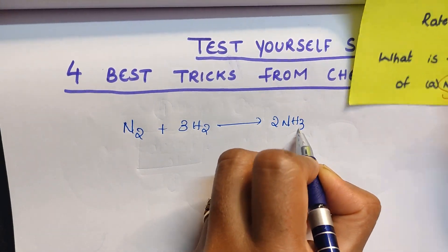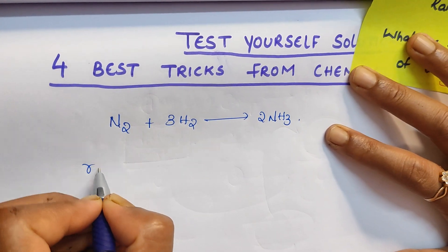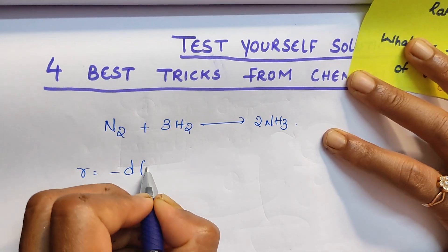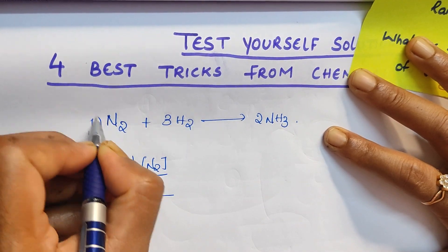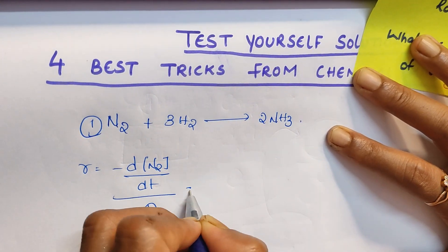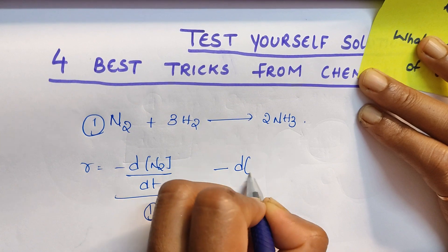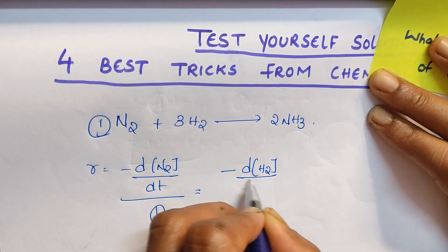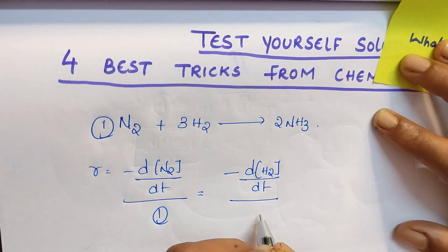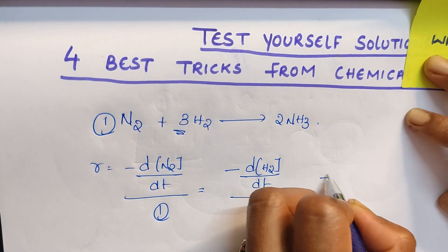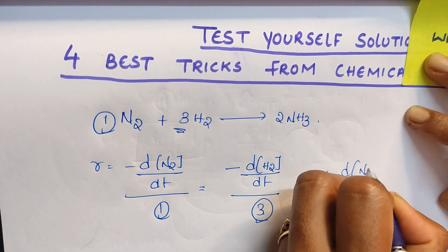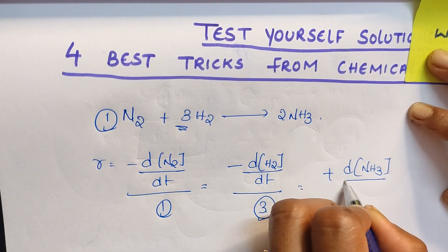How to write the rate expression? Rate equal to minus d of N2 by dt divided by stoichiometric coefficient. Nothing is there means you need to write one. Minus d of H2 by dt. How to write the stoichiometric coefficient? You write the stoichiometric coefficient in denominator. This I taught clearly in a previous video.